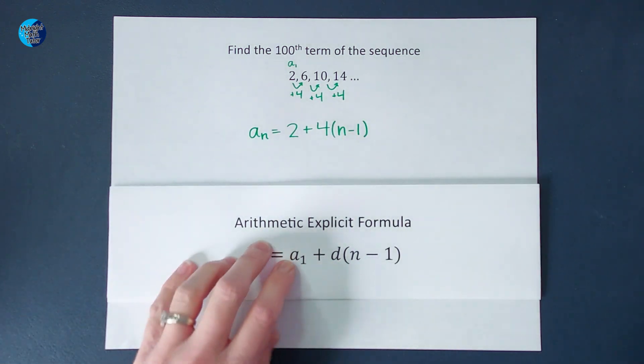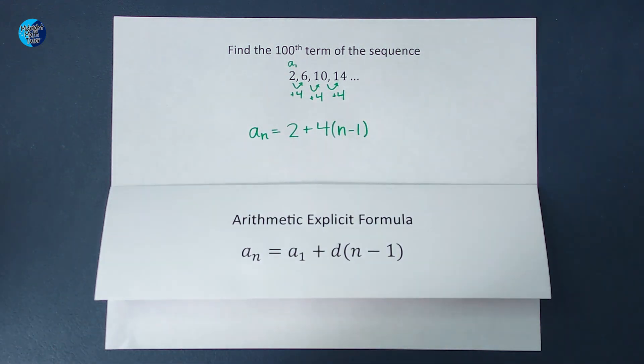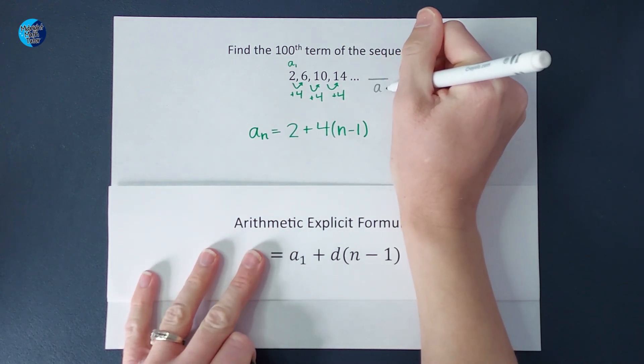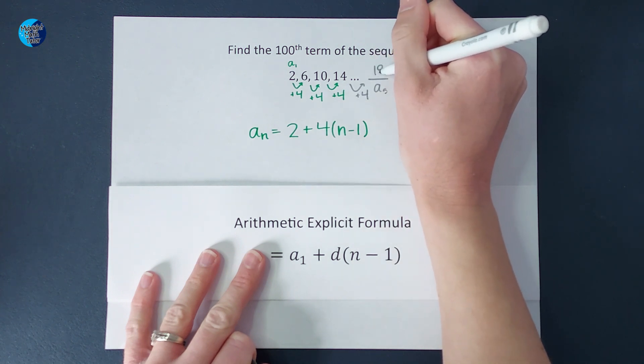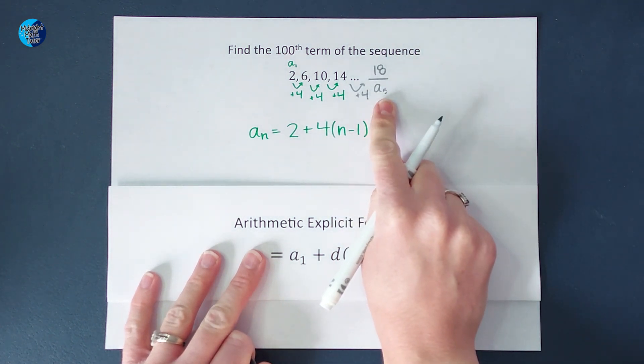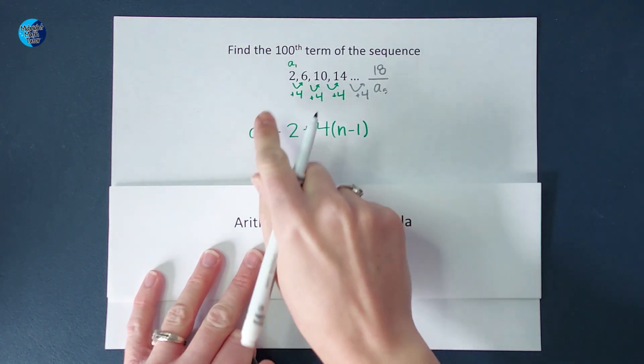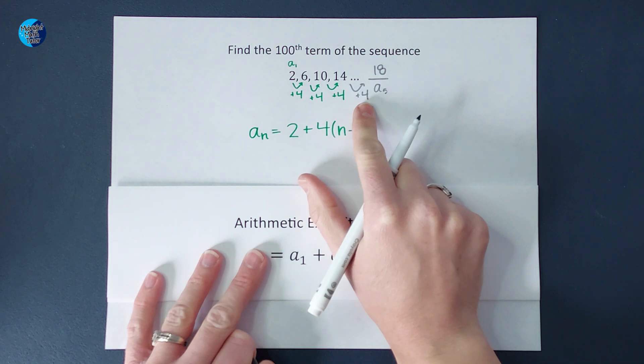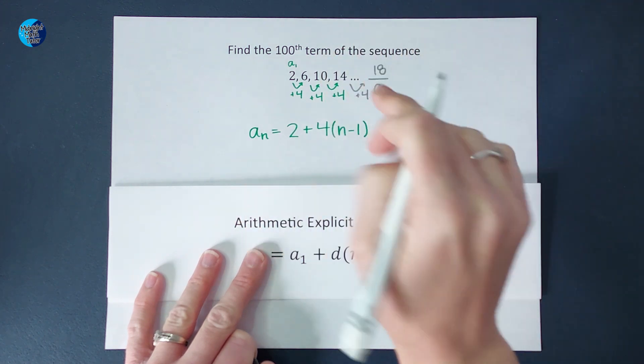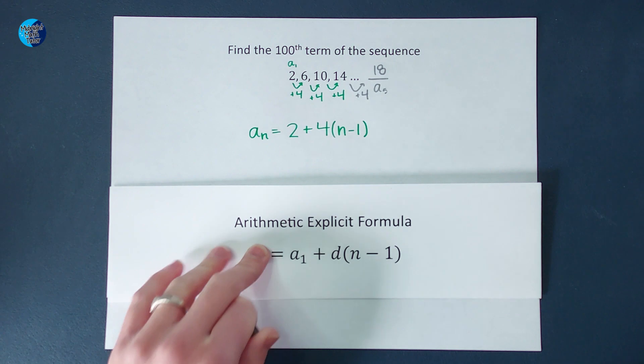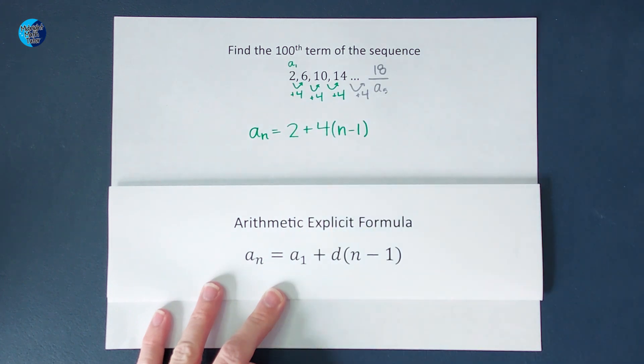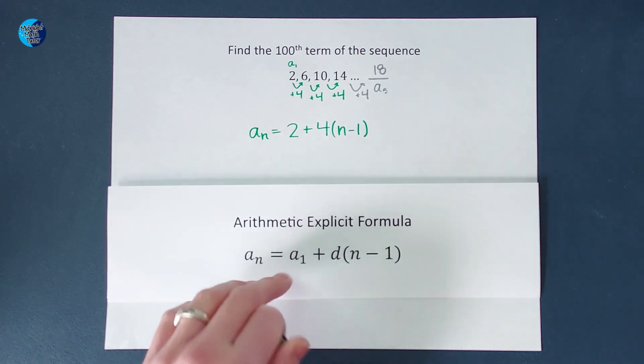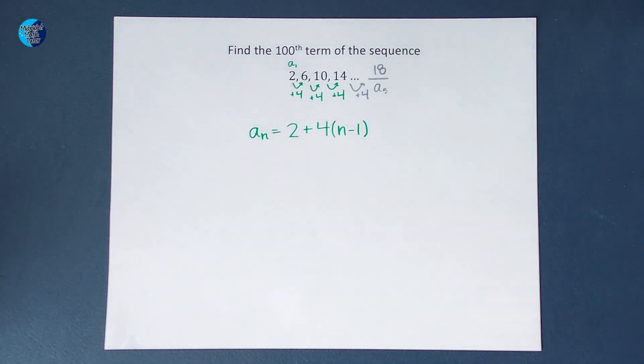If I were to look for the fifth term in this sequence, the next one, we could also call it a sub 5, I would add 4 again and get 18. So to find the fifth term, how many times did I end up adding 4? I added 4 one, two, three, four times. To find the fifth term, I added 4 four times. So that's where the n minus 1 comes in. If we're looking for the hundredth term, we would end up adding 4 ninety-nine times, one less than whatever number we're trying to find. So this is my equation here.